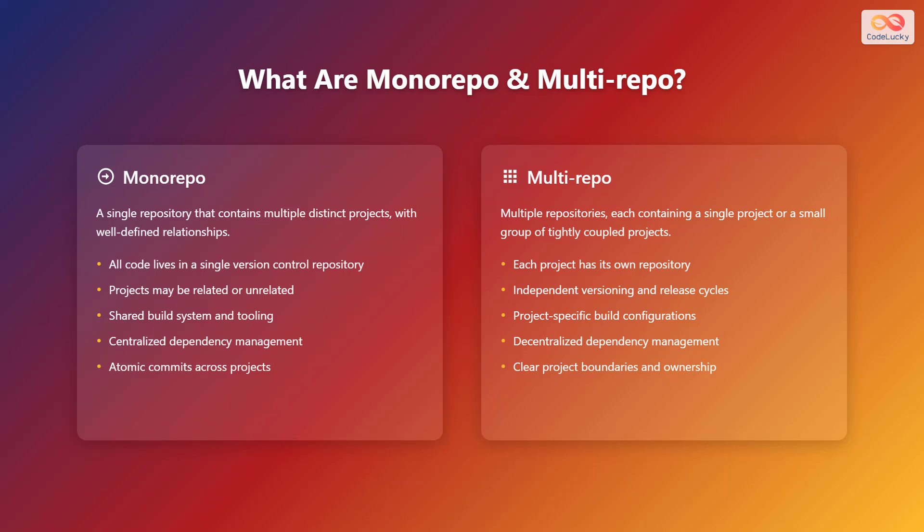In contrast, a multirepo consists of multiple repositories, each containing a single project or a small group of tightly coupled projects. Key characteristics are: each project has its own repository, independent versioning and release cycles, project-specific build configurations, decentralized dependency management, and clear project boundaries and ownership.